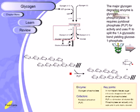Glycogen phosphorylase has the cofactor pyridoxal phosphate. In non-hepatic tissues, the sugar released is trapped in the cells since it is phosphorylated. Pyridoxal phosphate is a derivative of vitamin B6.